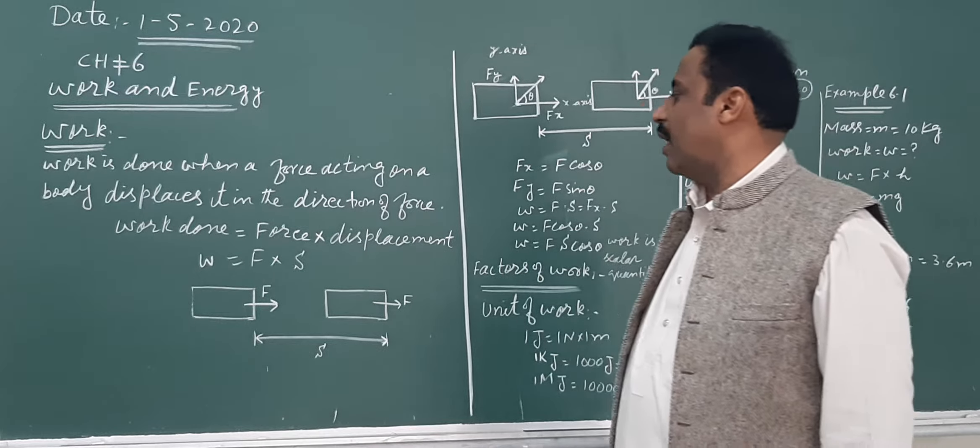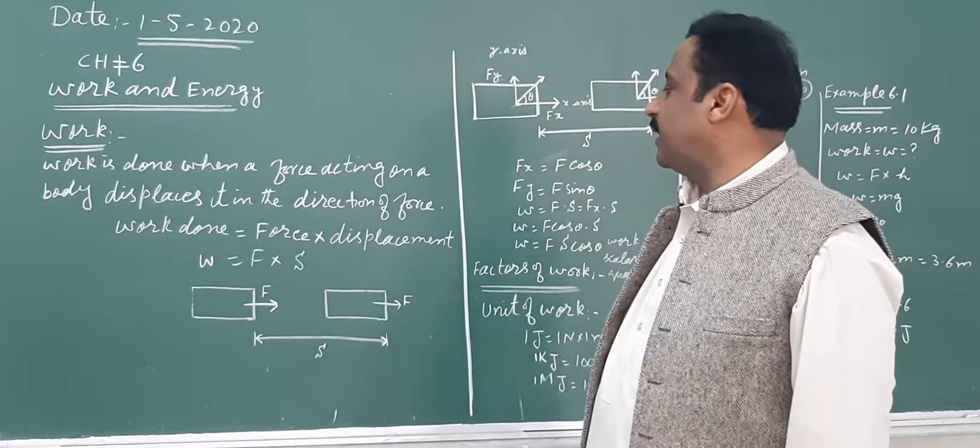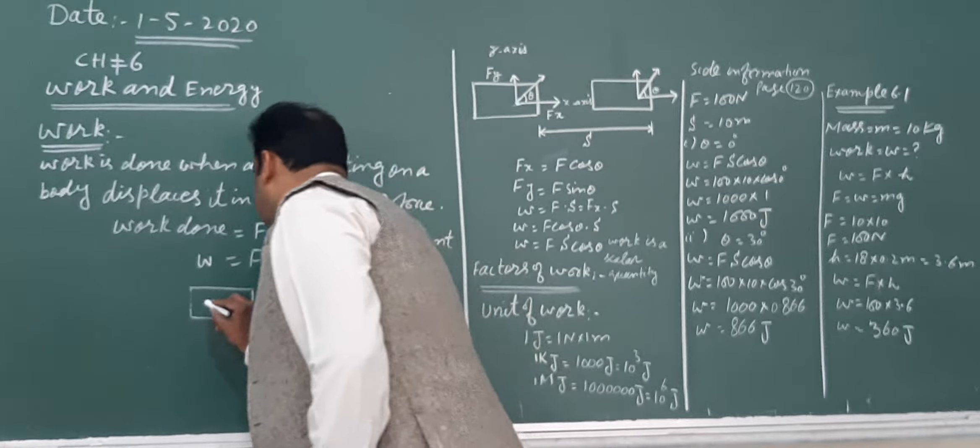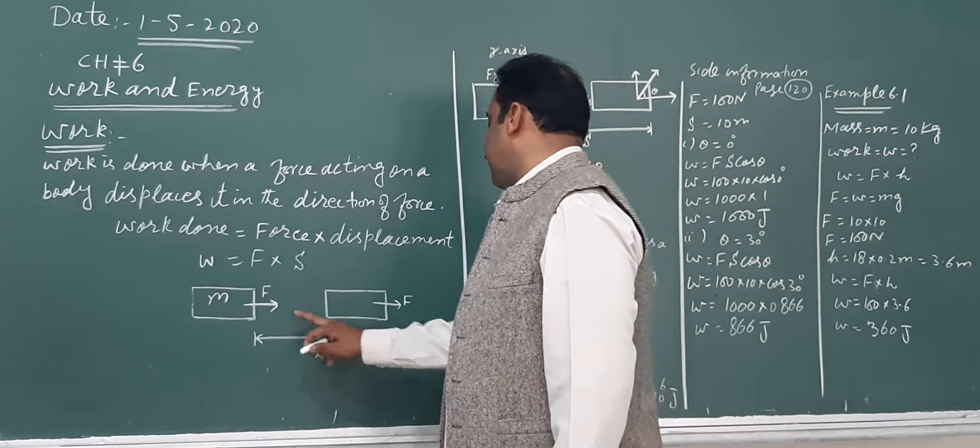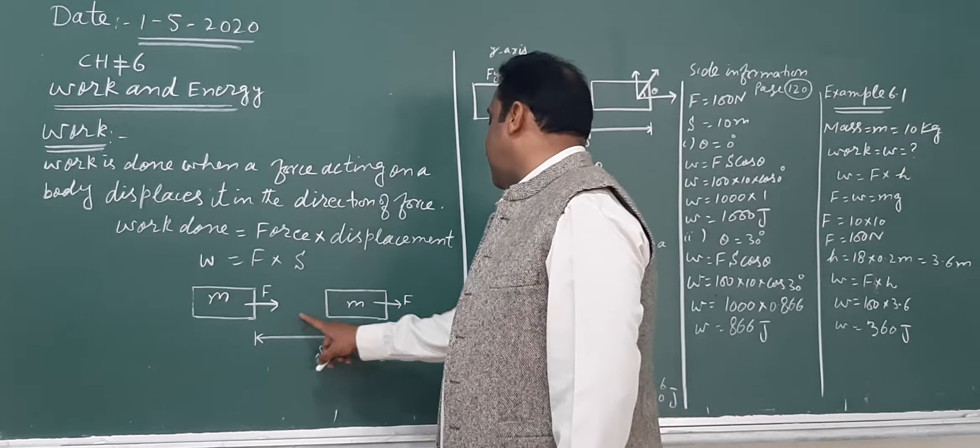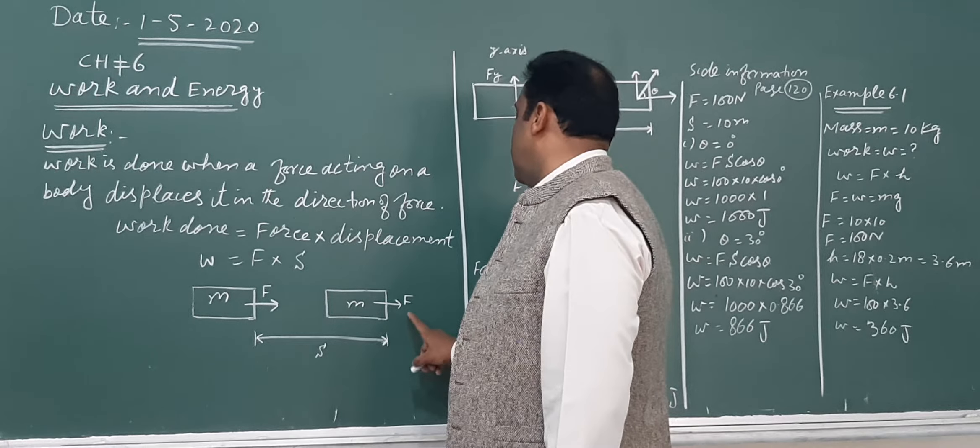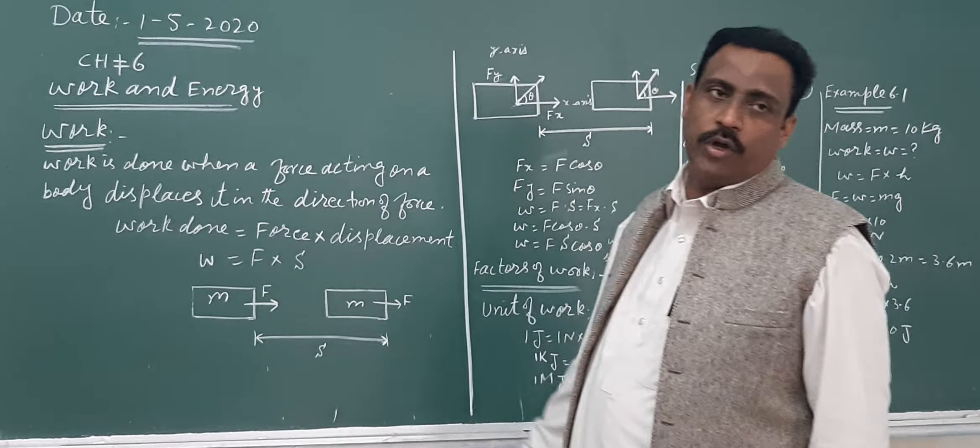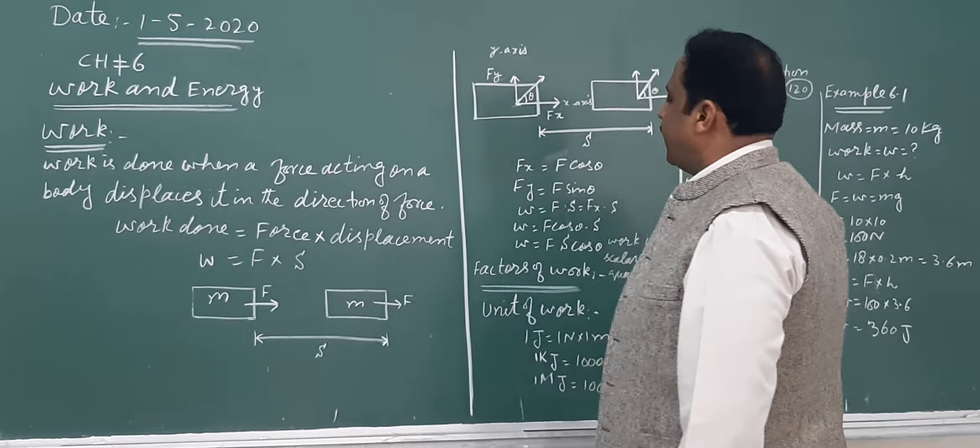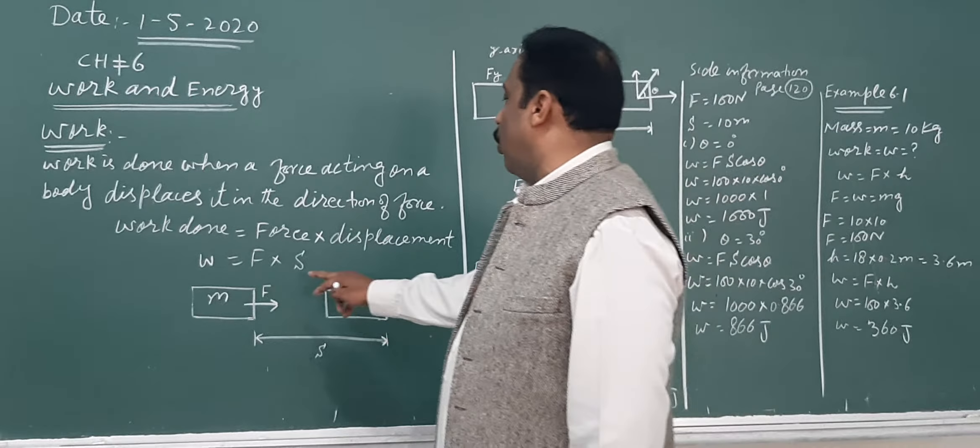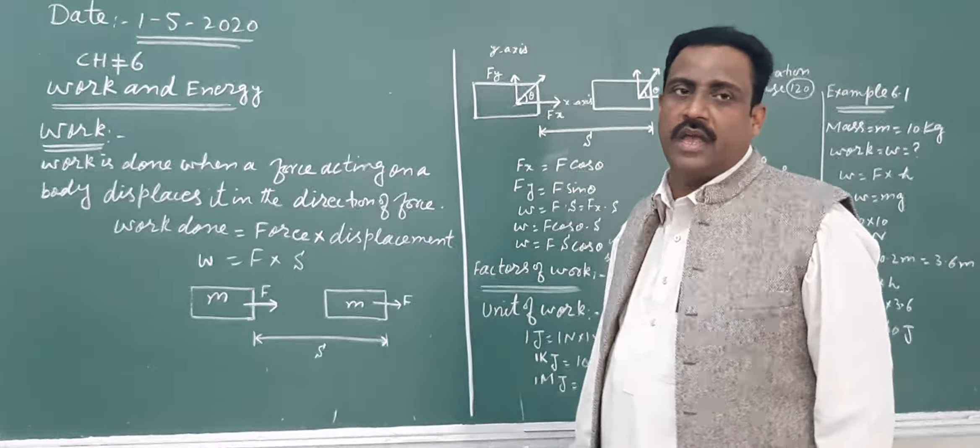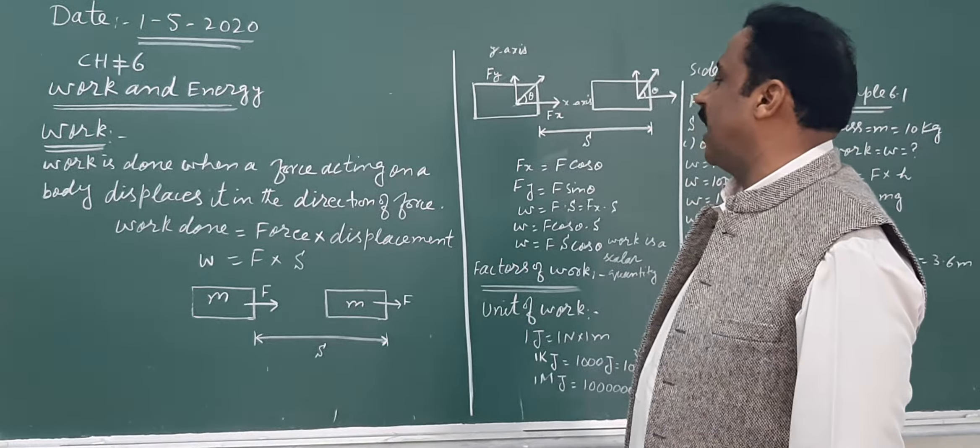Here we have a body with mass M. We apply a force, and the body travels a displacement S. This is where displacement occurs. In this case, when we have a force in the direction of displacement, we define the product of force and displacement as work.